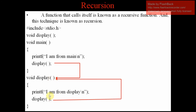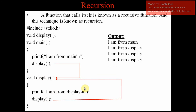So what will happen? Again it will execute 'I am from display,' then again it will call the same function. Again it will display 'I am from display,' then it will call the same function. So it will happen without any stop. This technique is called recursion. If any function is calling the same function again and again, it is called recursion.